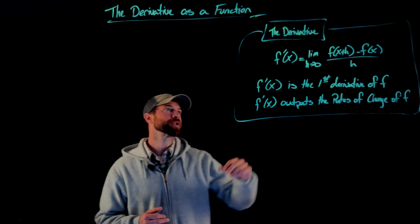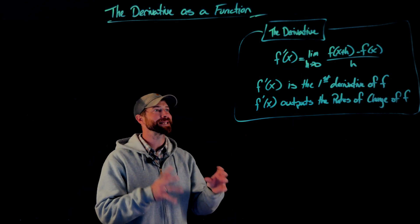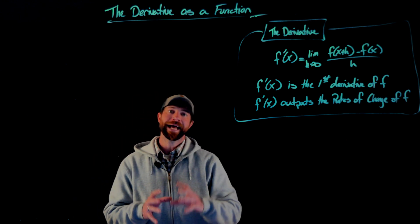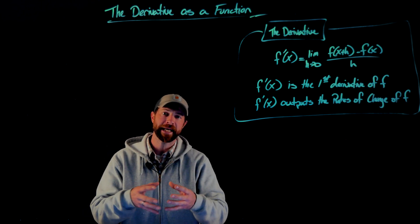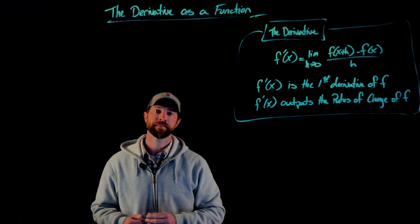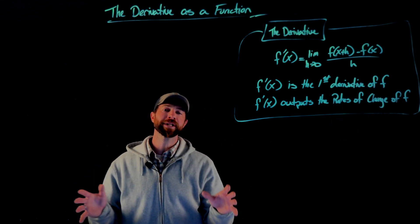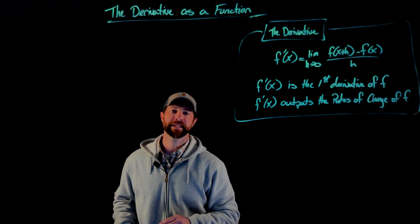The definition we'll be using for the derivative is the limit as h goes to zero of f of x plus h minus f of x over h. This is the first derivative of f, and importantly this derivative function outputs the rates of change of the original function. What the rates of change statement means differs by functions, but it's really easy to figure out what the units of that derivative function are.